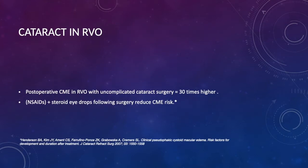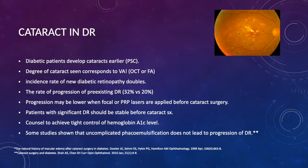In the case of vein occlusion, postoperative cystoid macular edema in uncomplicated cases can occur 30 times higher than in non-vein occlusion eyes. Now we come to the complicated subject of cataract and diabetic retinopathy. Patients who are diabetic can develop cataract at a higher rate, especially posterior subcapsular cataract. The degree of cataract seen in many cases does not correspond to the visual acuity. You should get an OCT or fluorescein angiography. The incidence rate of new diabetic retinopathy doubles after surgery, and the rate of progression in pre-existing conditions can even increase.